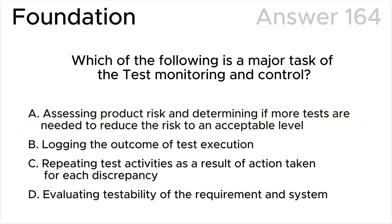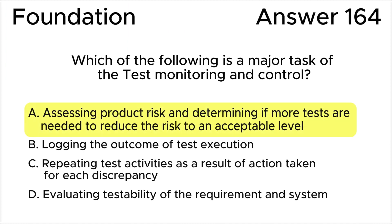Correct answer is A. Assessing product risk and determining if more tests are needed to reduce the risk to an acceptable level is a major task of test monitoring and control. Test monitoring and control involve overseeing the testing process, ensuring that it aligns with project goals and objectives. Assessing product risk is a critical aspect of monitoring and control.